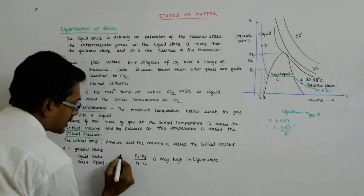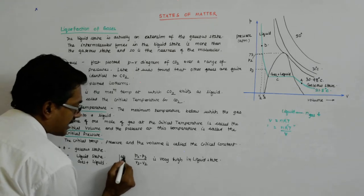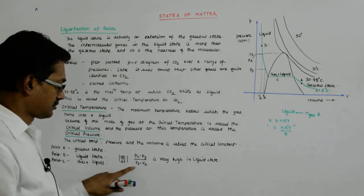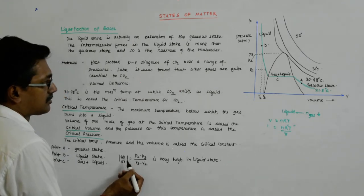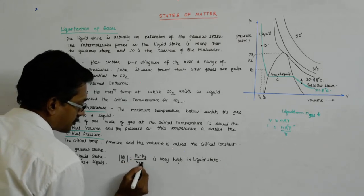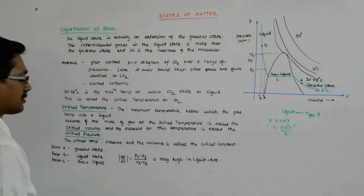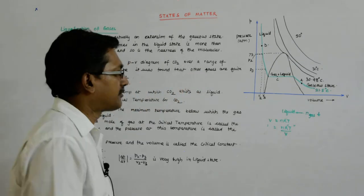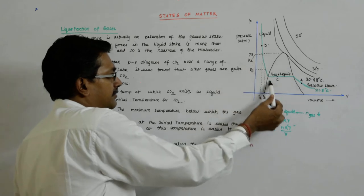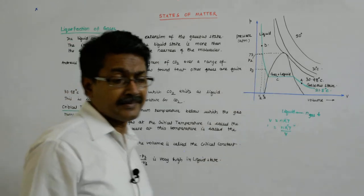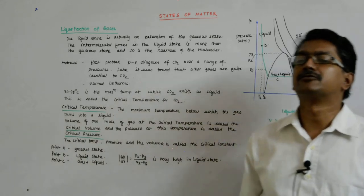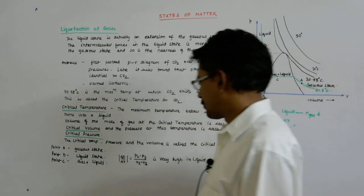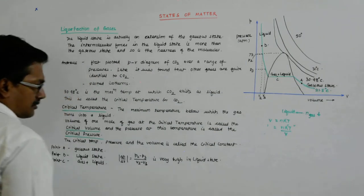I can say that the mod of delta P upon delta V, this is a negative value. Not this, V2 minus V3. This is a negative value. Why? Because in the straight lines, if this is considered as a straight line, then it has a negative slope. Why? Because it's making an obtuse angle.